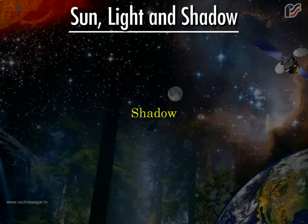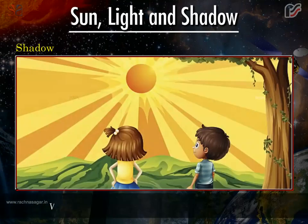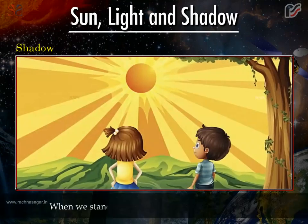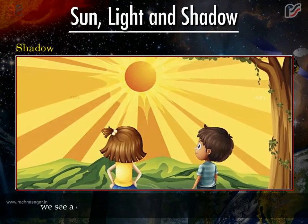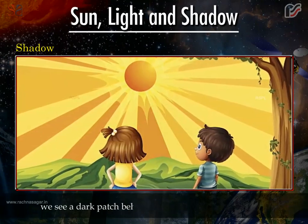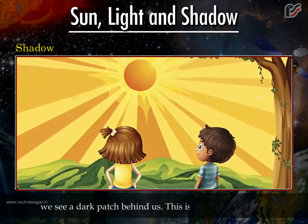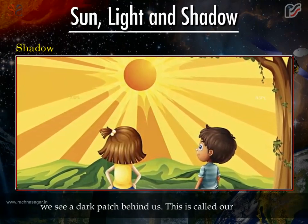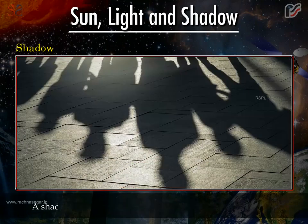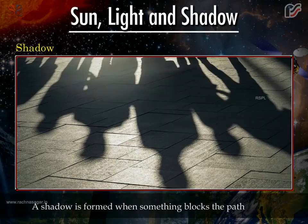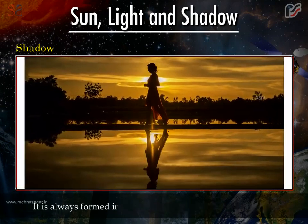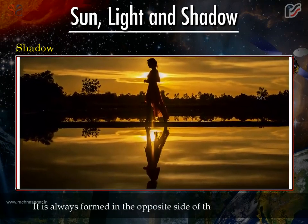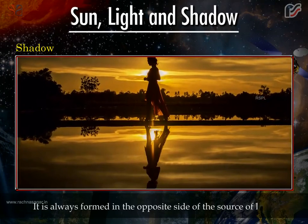Shadow. When we stand with our face towards the rising sun, we see a dark patch behind us. This is called our shadow. A shadow is formed when something blocks the path of light. It is always formed on the opposite side of the source of light.